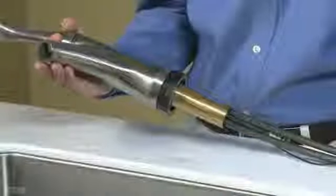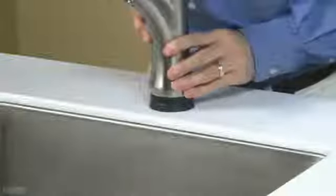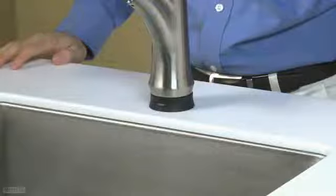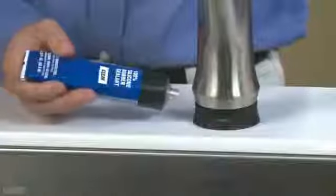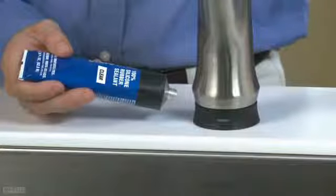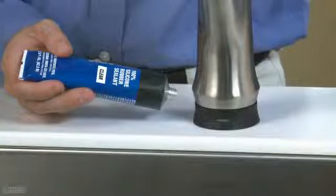To mount the faucet body to the sink, feed the supply lines, the orange solenoid connection wire, and the black LED wire through the hole in the sink. Place the faucet body on the sink, making sure that the LED light is facing forward. If you're using the escutcheon plate, ensure that the faucet body is correctly aligned onto the escutcheon. If the surface of the sink is rough or uneven, use a little silicone on the gasket to help seal gaps.